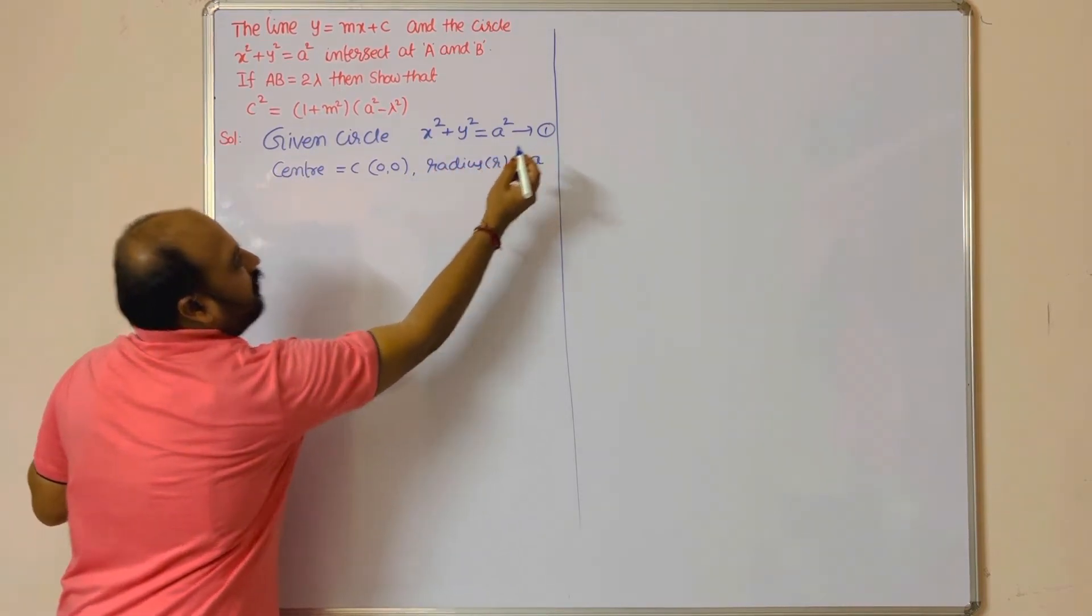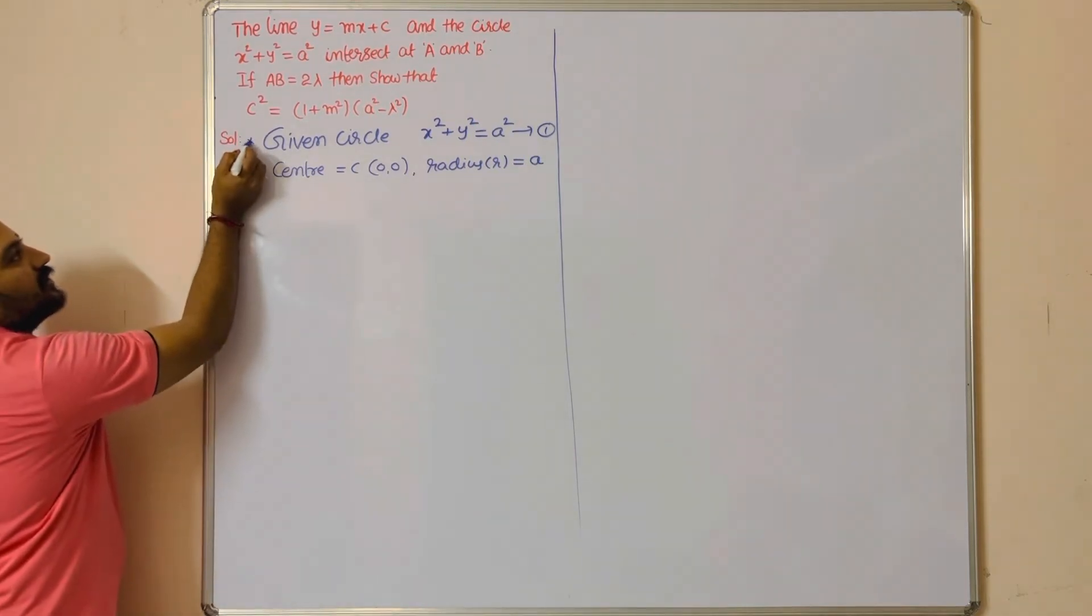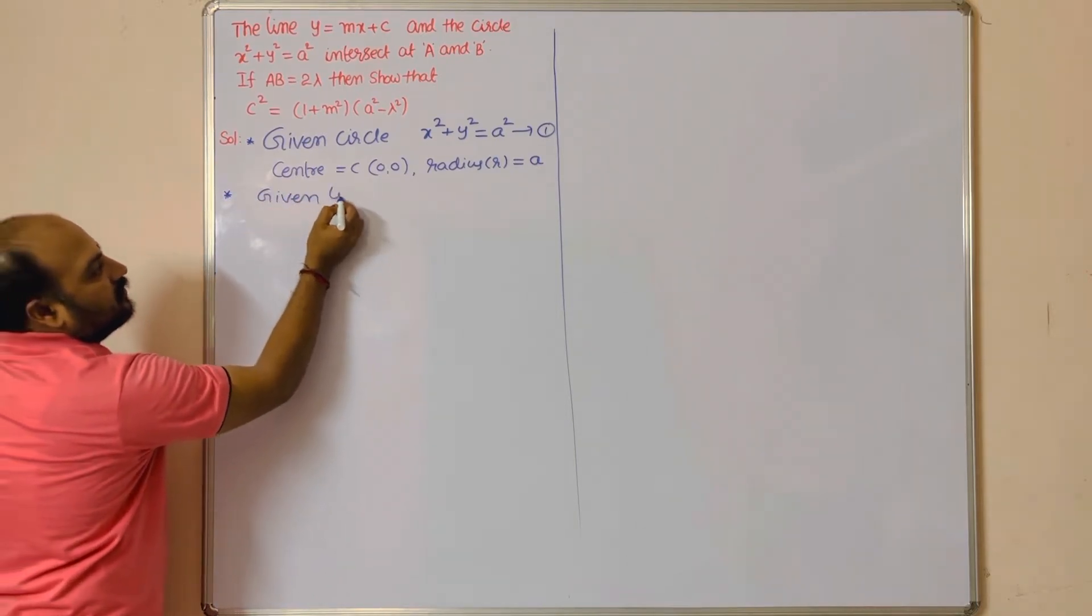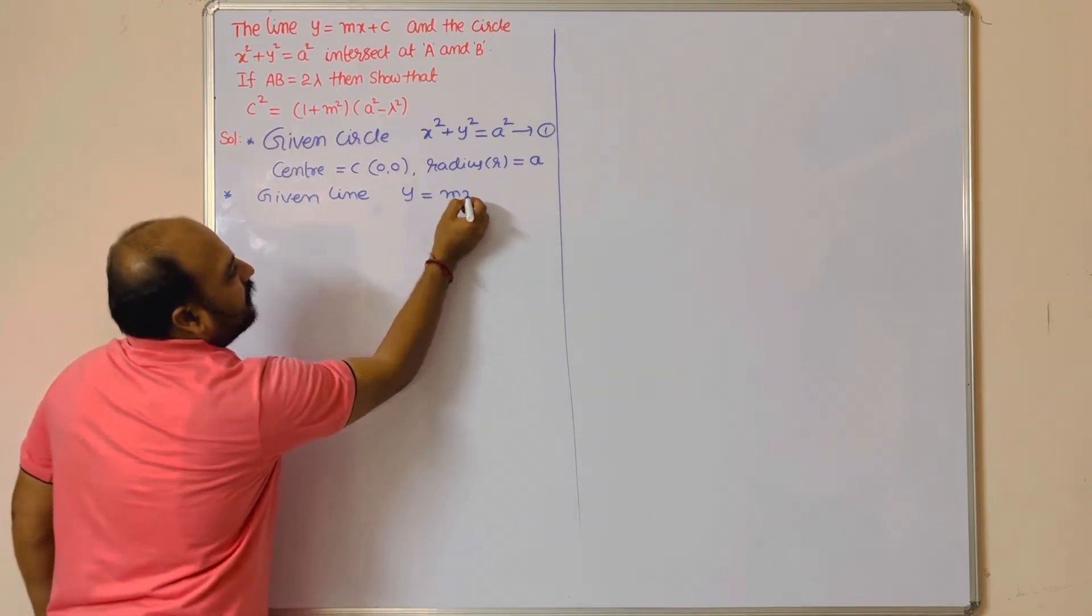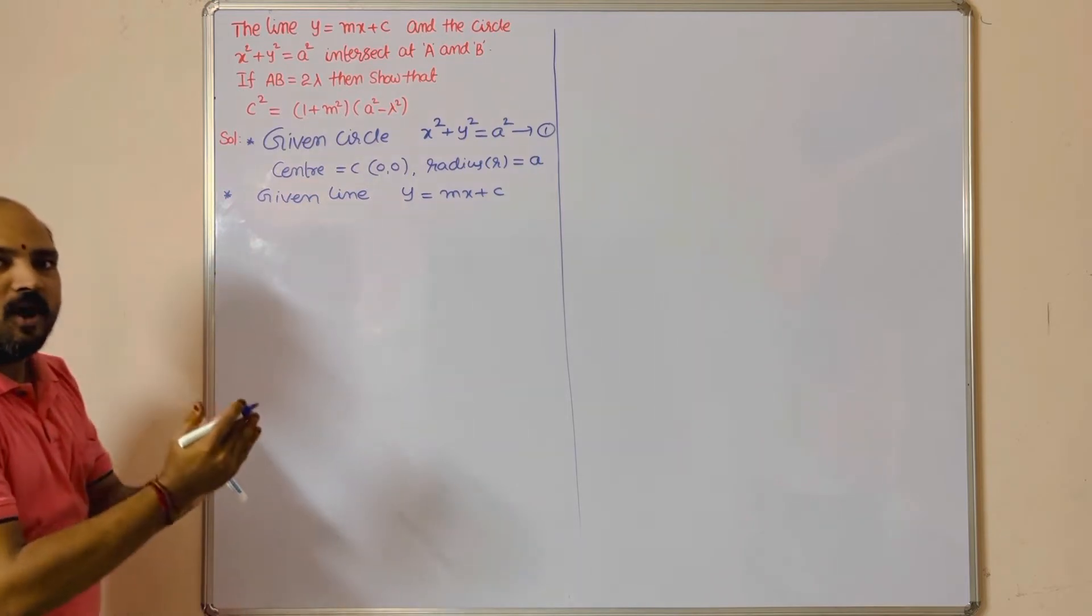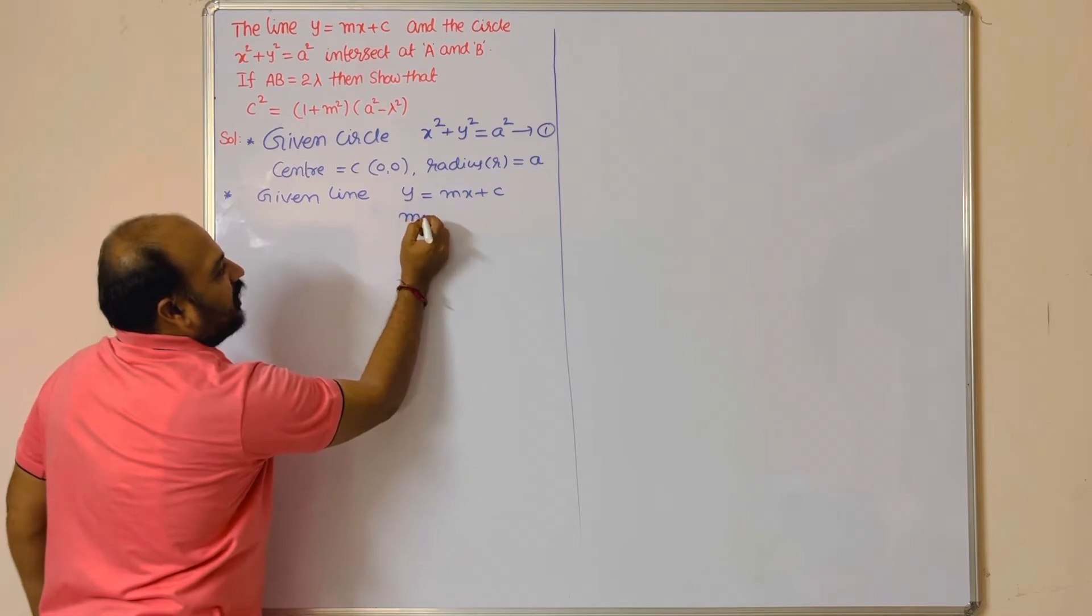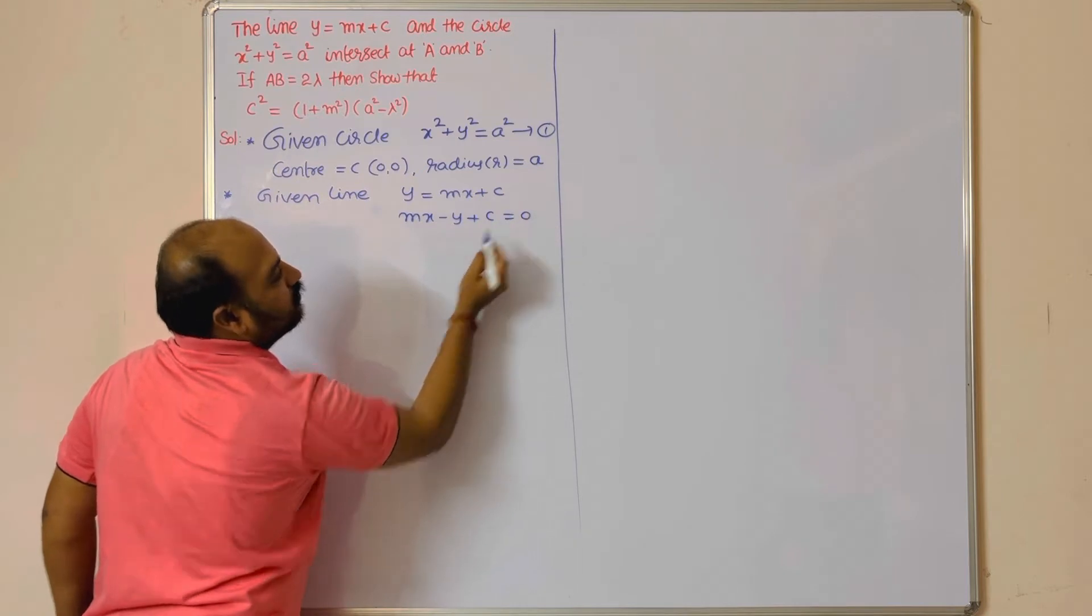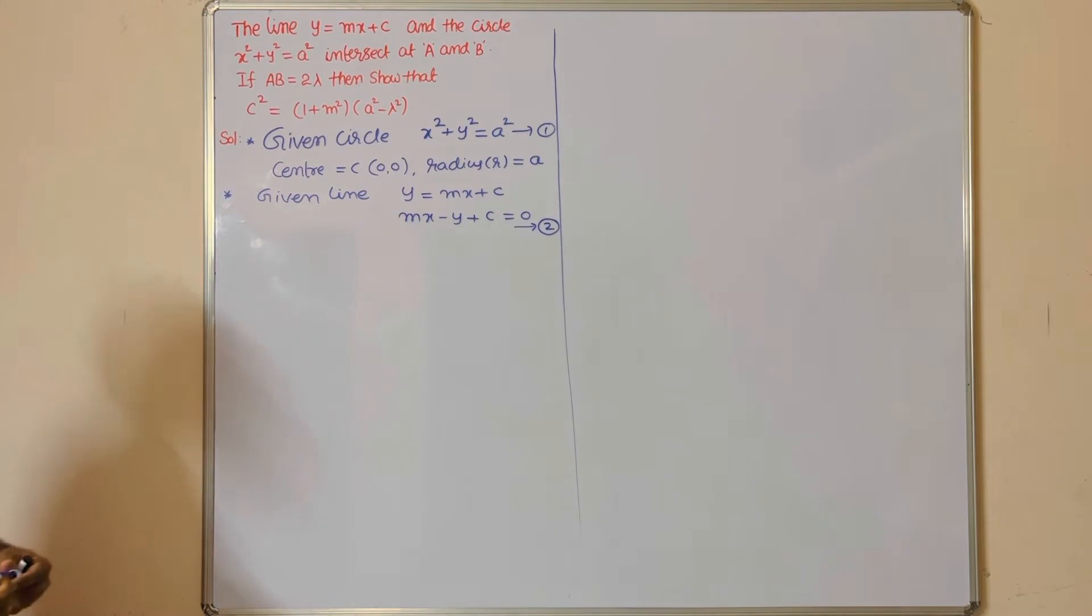Next, given line: y = mx + c. Write in the form ax + by + c = 0. So why are we taking this side? mx - y + c = 0. Keep that as equation number 2.